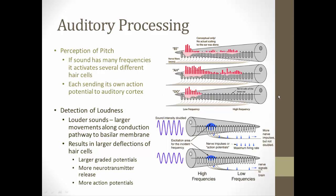Loudness is determined by the magnitude of movement along the conduction pathway to the basilar membrane. Quiet sounds cause only small basilar membrane movement and a low number of action potentials from the hair cells. But a loud noise causes the basilar membrane to vibrate much more, producing larger graded potentials, releasing more neurotransmitter into the afferent fibers, causing more action potentials — which your brain interprets as a louder noise.